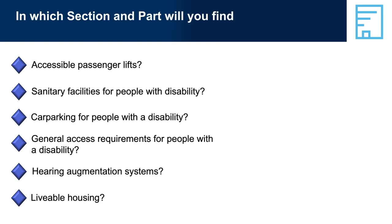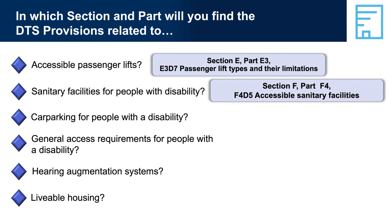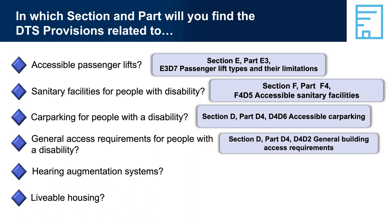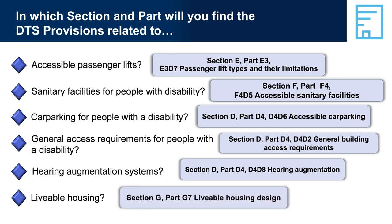In which section and part will you find the DTS provisions related to: Accessible Passenger Lifts — Section E, Part E3, E3D7, Passenger Lift Types and Their Limitations; Sanitary Facilities for People with Disability — Section F, Part F4, F4D5, Accessible Sanitary Facilities; Car Parking for People with a Disability — Section D, Part D4, D4D6, Accessible Car Parking; General Access Requirements for People with a Disability — Section D, Part D4, D4D2, General Building Access Requirements; Hearing Augmentation Systems — Section D, Part D4, D4D8, Hearing Augmentation; Livable Housing — Section G, Part G7, Livable Housing Design.